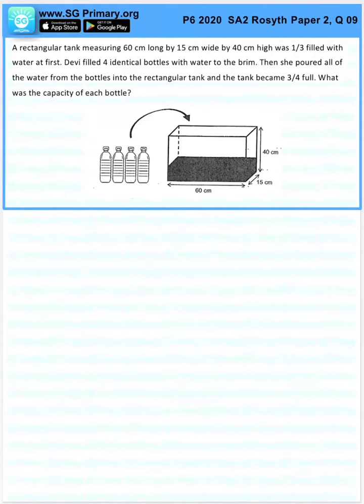Question 9. A rectangular tank measuring 60 by 15 by 40 was one-third filled with water at first. Devi filled four identical bottles with water to the brim. Then she poured all of them into the rectangular tank and the tank became three-quarters full. What was the capacity of each bottle?